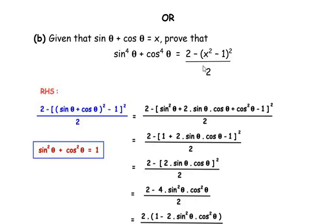We consider the right hand side and replace x with (sin θ + cos θ). So the right hand side becomes 2 minus [(sin θ + cos θ)² − 1]² all over 2. Expanding (sin θ + cos θ)² using the (a + b)² formula gives sin²θ + 2 sin θ cos θ + cos²θ, so we have 2 minus [sin²θ + 2 sin θ cos θ + cos²θ − 1]² divided by 2.